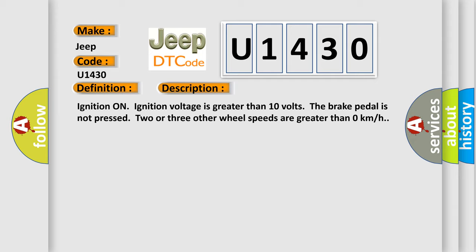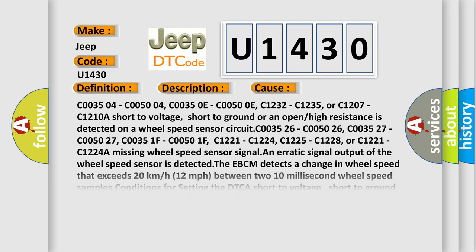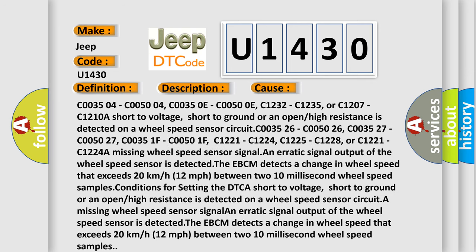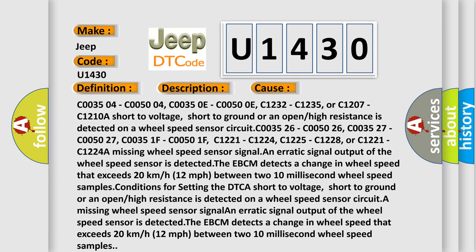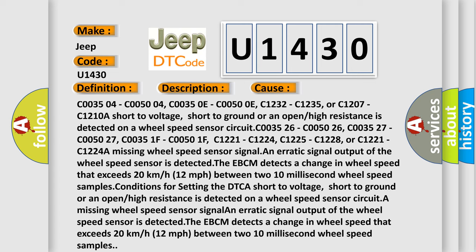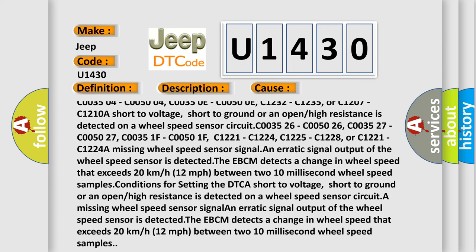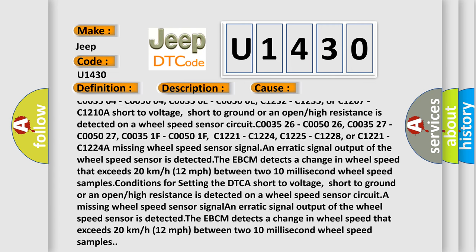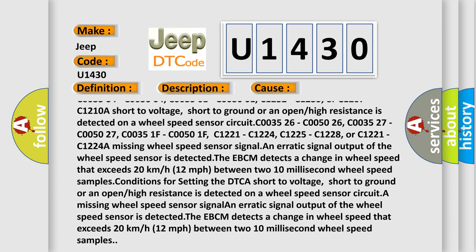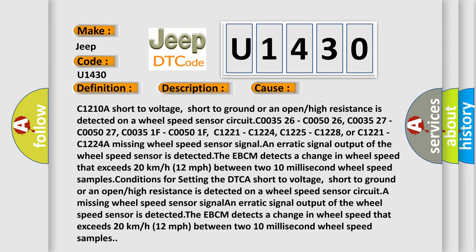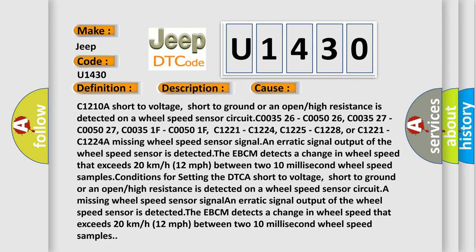This diagnostic error occurs most often in these cases: C003504, C005004, C00350E, C00500E, C1232, C1235, or C1207, C1210. A short to voltage, short to ground, or an open or high resistance is detected on a wheel speed sensor circuit.